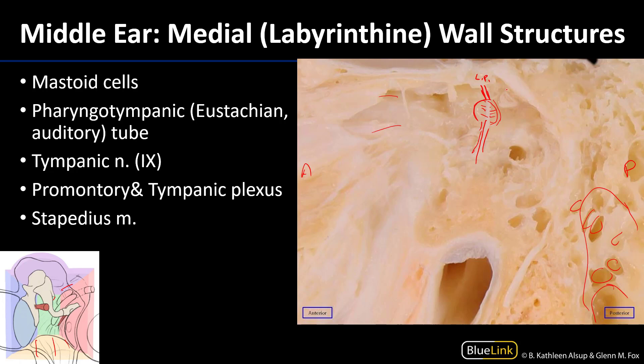Just posterior to the promontory we can see another ossicle — the stapes. The stapes sits with its footplate in the oval window, conducting sound vibrations to the oval window and then into the inner ear. Below the oval window we have the round window, which is a membranous part of the medial wall that allows for some expansion of the perilymph within the cochlea.